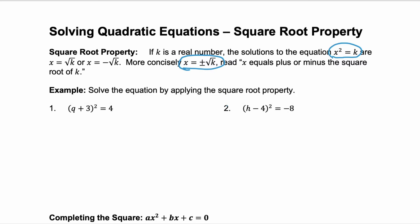In the next example, we're going to solve the equations by applying the square root property, so we take the square root of each side. In example one, we take the square root of the left side and the square root of the right side. On the left, because you're taking the square root of something that's squared, you're left with q plus 3 — the base — and it's equal to plus or minus the square root of 4. We can simplify the square root of 4, so we have q plus 3 equals plus or minus 2.